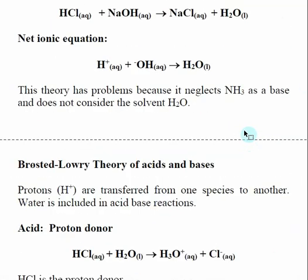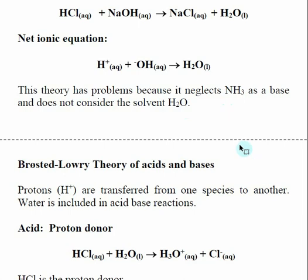One of the main problems with the Arrhenius theory of acids and bases is that it does not explain how ammonia is a base. Also, the Arrhenius theory completely neglects the fact that water is involved — when we start looking at acid and base equilibrium, we'll find that water is actually a very important part of the equilibriums involved. To help explain why ammonia acts as a base, we need to expand our definitions of acids and bases.